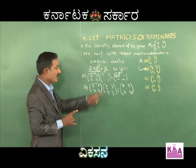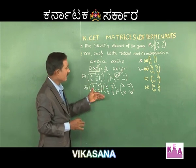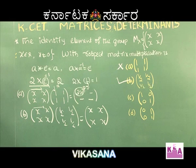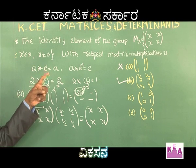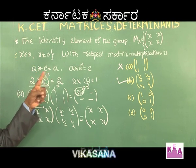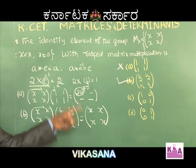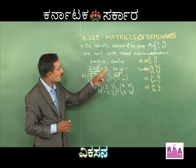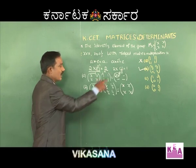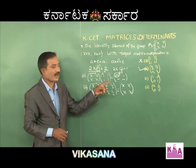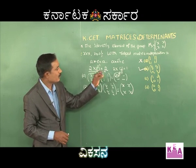Option B is the right choice. C and D can also be verified. Suppose x = 2: the identity element of the group Mx for x = 2 with respect to matrix multiplication is [1/2, 1/2; 1/2, 1/2]. Whatever the value of x, the identity element is always [1/2, 1/2; 1/2, 1/2].